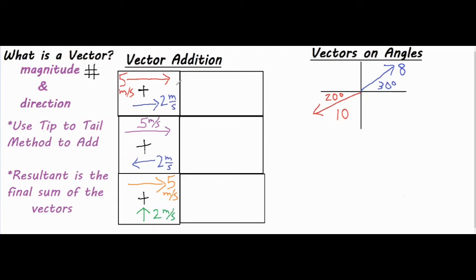Here is a basic example of two vectors — a bike traveling five meters per second to the right, and wind blowing to the right at two meters per second. You draw your first vector, then connect the second vector tip to tail. Your final answer is an arrow from the beginning to the tip of the last one, so five plus two equals seven meters per second. That is the resultant velocity.